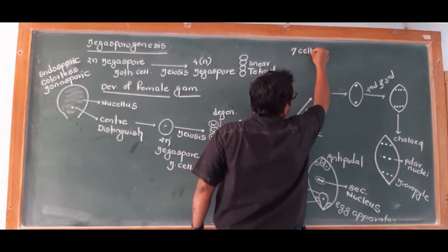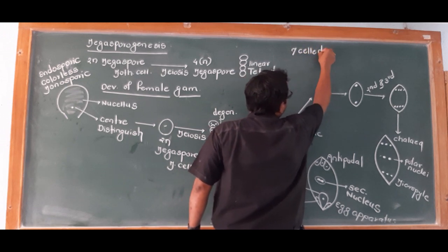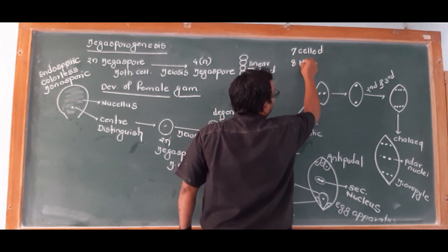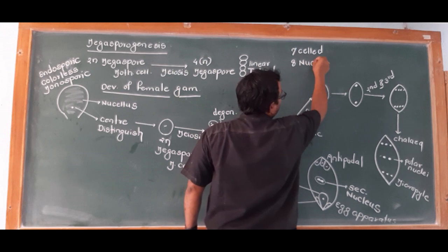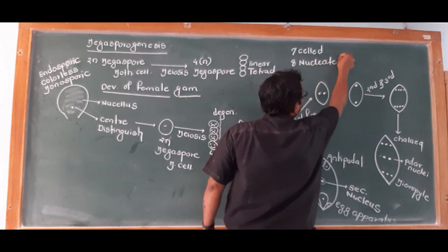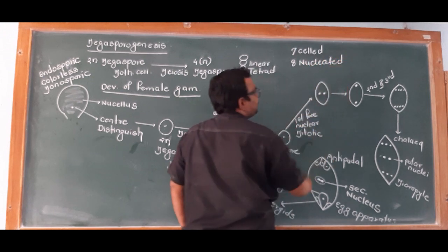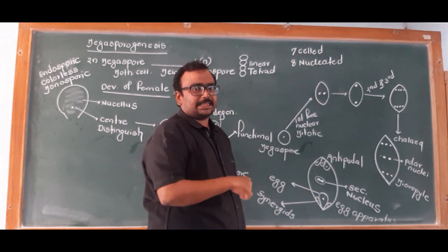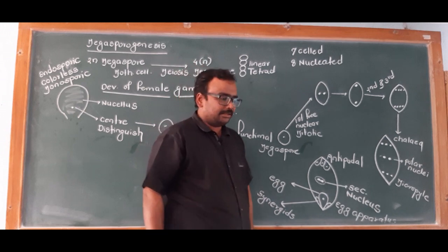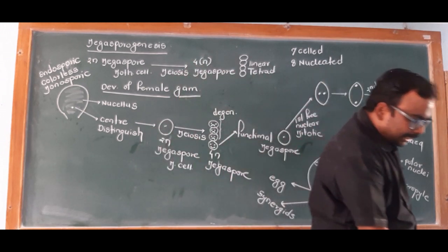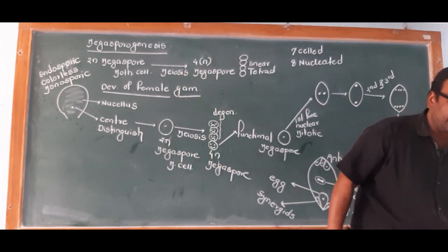So the female gametophyte is a 7-celled, 8-nucleated structure. This is the development of the female gametophyte.